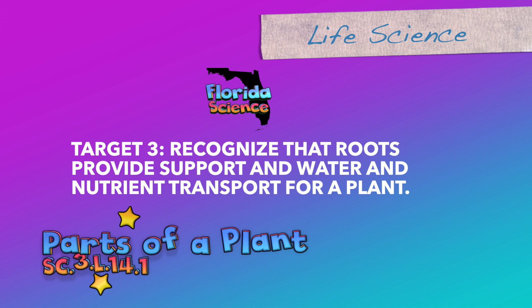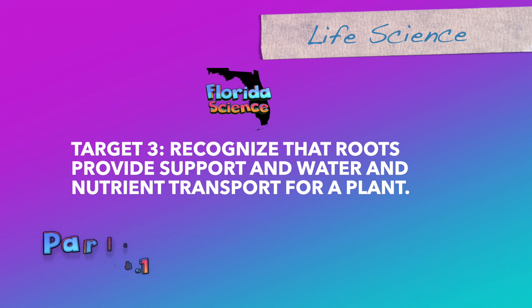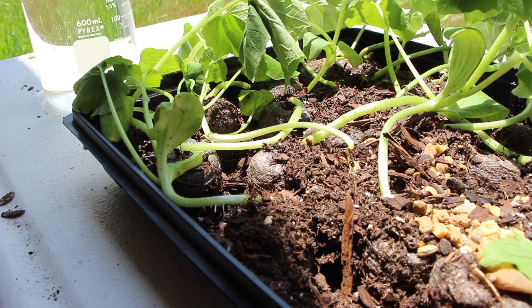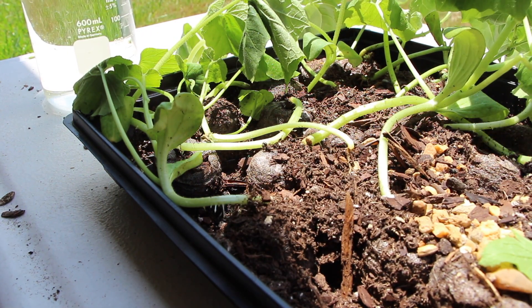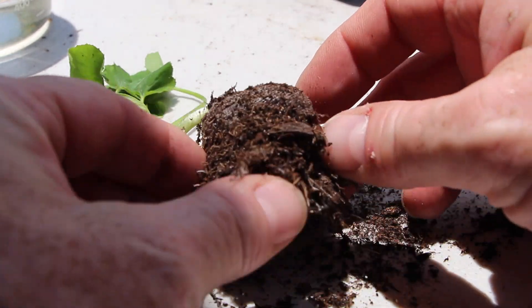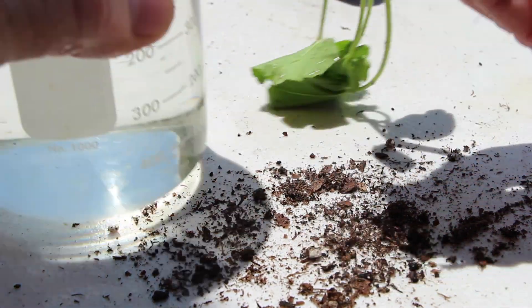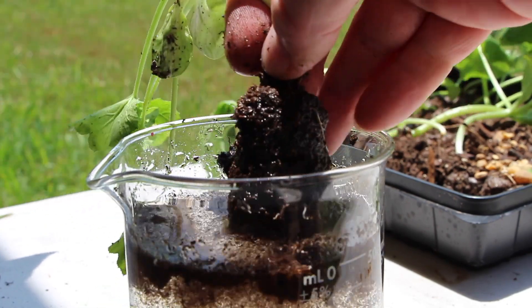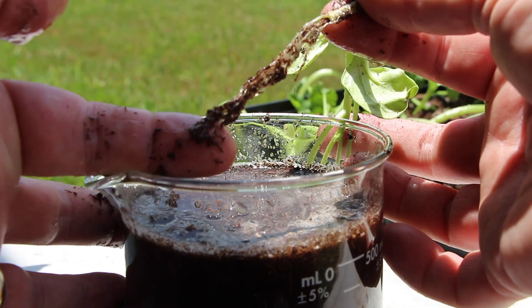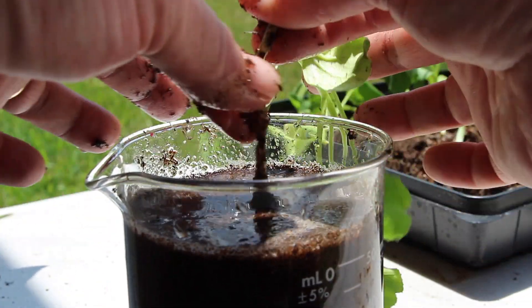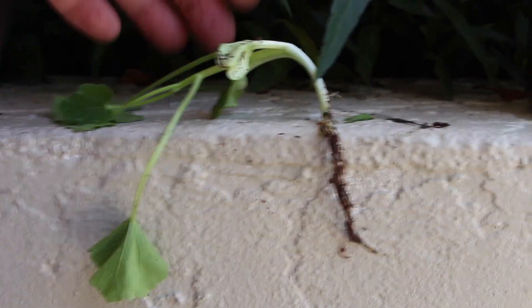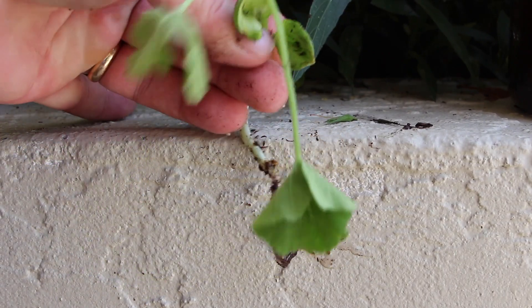Target 3. Recognize that roots provide support and water and nutrient transport for a plant. Roots are the part of a plant that grows into the soil. Roots help the plant get the water it needs to survive. Roots help the plant get the nutrients they need to help make the food they need to survive. Roots also provide support to help the plant stand up.